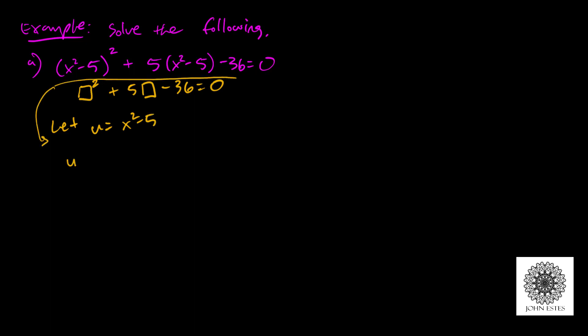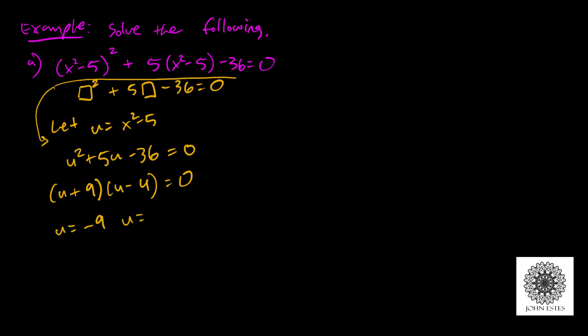With that substitution, my original equation becomes u-squared plus 5u minus 36 equals 0. I need two things that multiply to give me negative 36 and add to give me positive 5 — how about u plus 9 and u minus 4? Because 9 and negative 4 multiply to give negative 36 and add to give positive 5. So I get u equals negative 9 and u equals 4. Let's go back into our x language — that means x-squared minus 5 equals negative 9, and x-squared minus 5 equals 4. So I have two different quadratic equations.